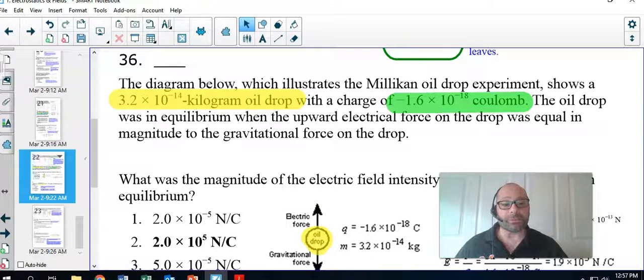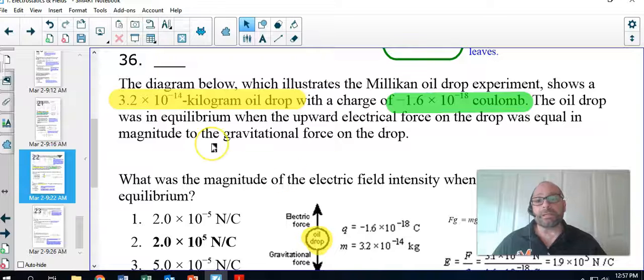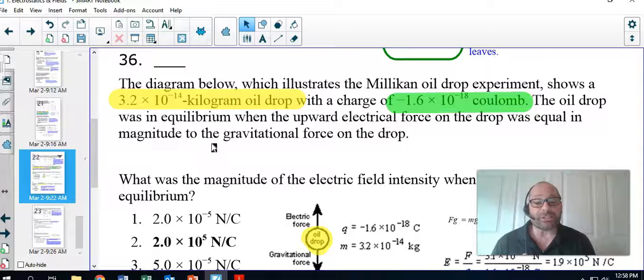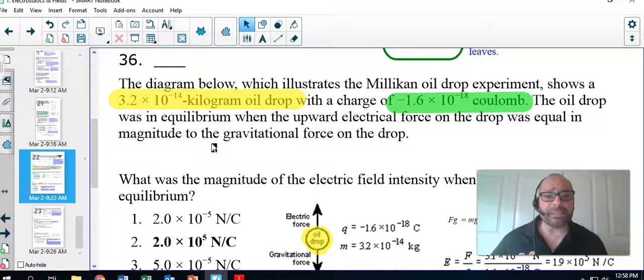problem about this Millikan oil drop experiment. In question 36, it says: The diagram below, which illustrates the Millikan oil drop experiment, shows a 3.2 times 10 to the negative 14 kilogram oil drop with a charge of negative 1.6 times 10 to the negative 18th Coulomb. The oil drop was in equilibrium when the upward electrical force on the drop was equal in magnitude to the gravitational force on the drop. It's very interesting that the Regents actually takes the time